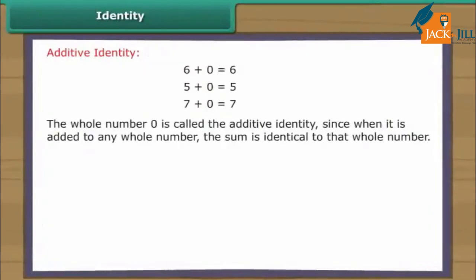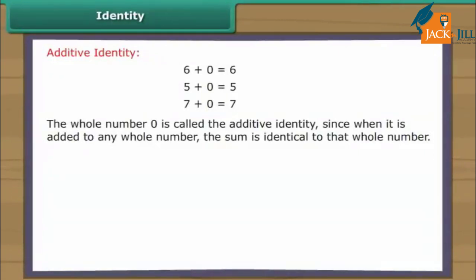Identity. The whole number zero is called the additive identity, since when it is added to any whole number, the sum is identical to that whole number. The whole number one is called the multiplicative identity, since when it is multiplied to any whole number, the product is identical to that whole number.